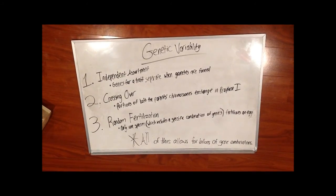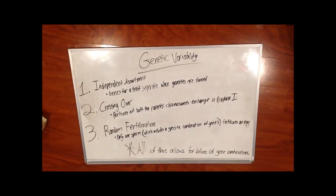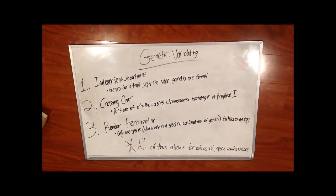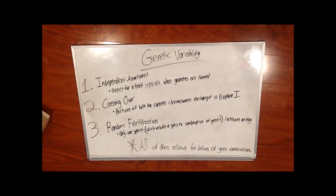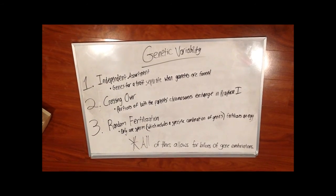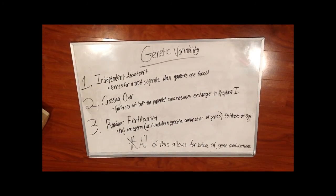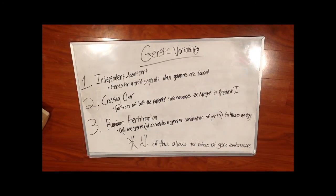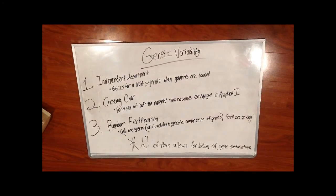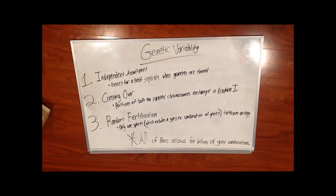Some sources of genetic variability include independent assortment, crossing over, and random fertilization. In independent assortment, gene-carrying strains separate when gametes are formed. In crossing over, portions of both parents' chromosomes are exchanged in prophase 1. In random fertilization, only one sperm with a specific combination of genes fertilizes an egg. All of this allows for a variety of gene combinations.